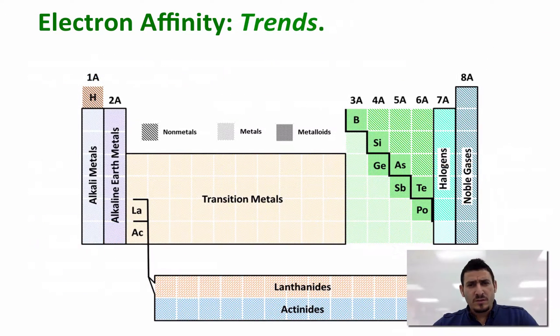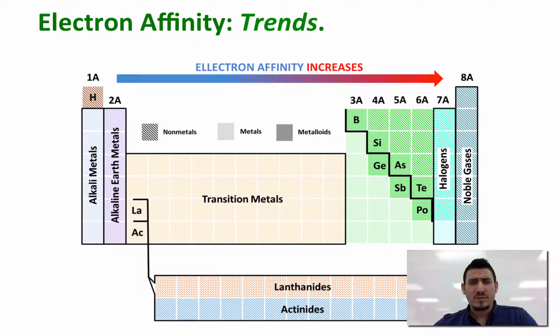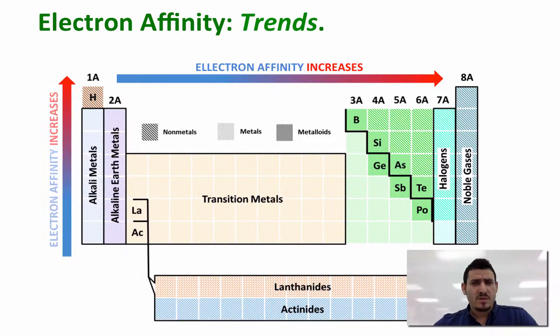In general, electron affinity increases when we go across a period from left to right, and it also increases when we go up in a group.